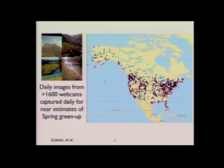We automatically grab images from those webcams and automatically quantify the greenness levels in those images on a daily basis, to look for quantified indications of how patterns of blossoming and the onset of spring are changing as weather patterns change in particular microclimates.